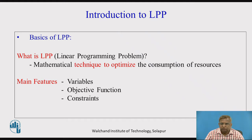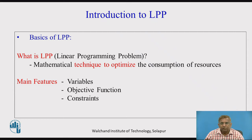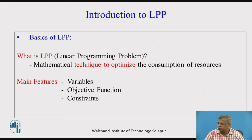Why LPP? All the relationships that we have here, they are linear in nature, so it is called a linear programming problem. The main features of LPP — the very first is the variables in the problem. Whatever the situation we are thinking of in any business for applying this LPP, we need to really focus on the types of variables. Defining these variables precisely is the most fundamental aspect in the formulation of an LPP problem. If you go wrong in defining variables, the problem will be wrong and the solution will be wrong.